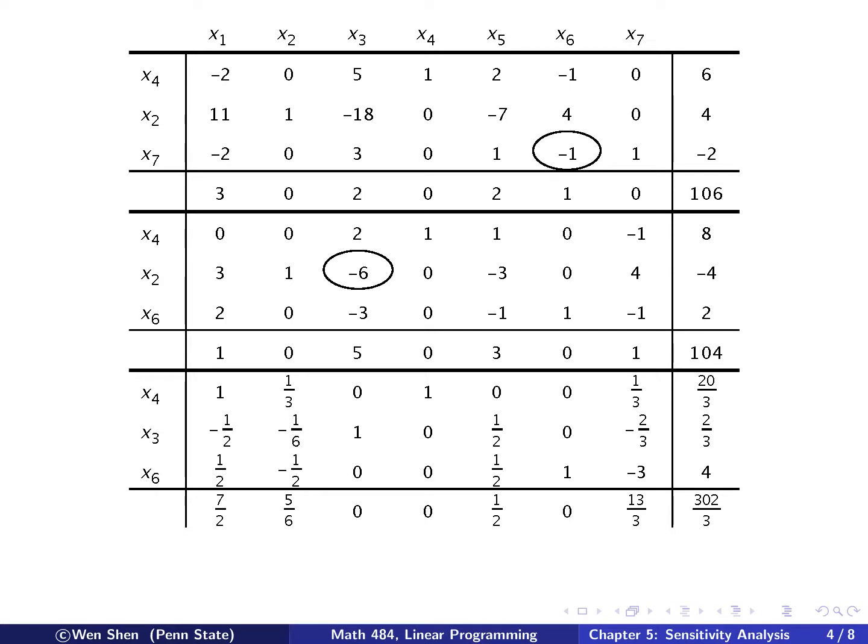And then let's check the ratio, 3 over negative 2, negative 1.5, 1 over 1, negative 1. This one is bigger, so I pivot here. After pivoting, I get the second part of the tableau.